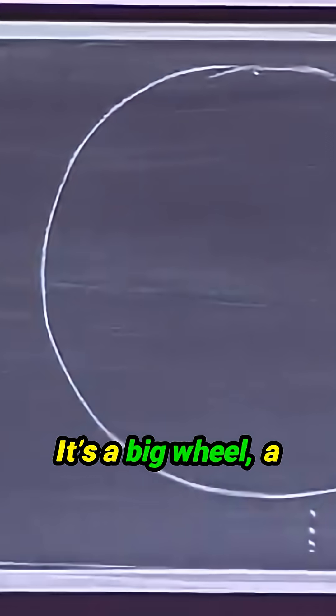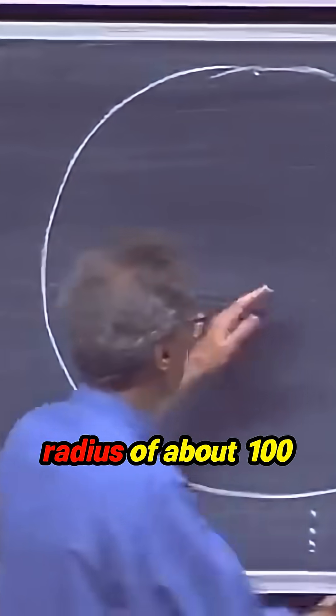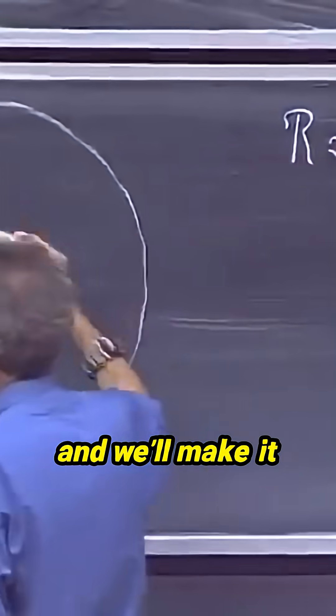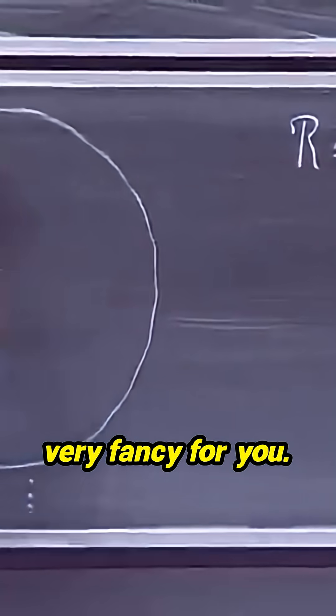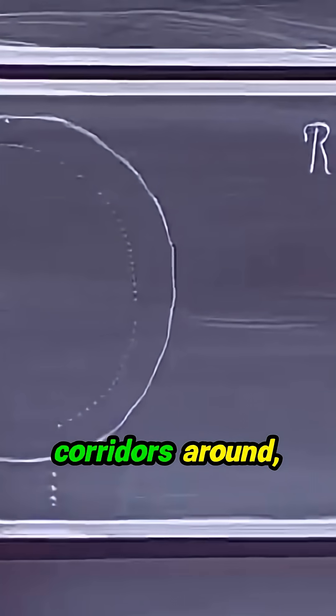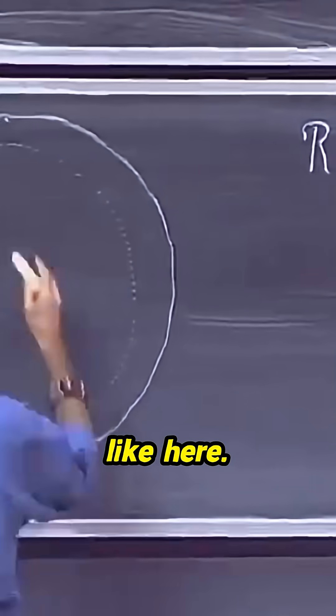The space station has a radius of about 100 meters. We'll make it very fancy, with corridors around it.